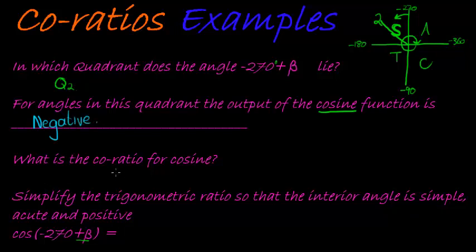Next, what is the co-ratio for cosine? Now we can see, cosine is the co-ratio for sine, and so is sine for cosine. So it is sine.